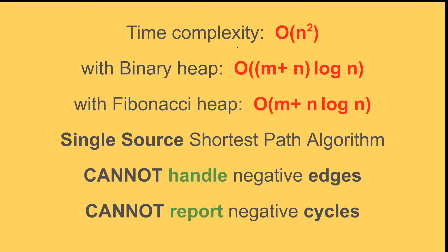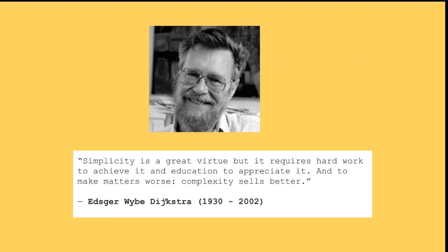As a summary, the time complexity of this algorithm, because it has two main loops, is order of n squared normally, n being the number of nodes in the graph. With a binary heap or a Fibonacci heap, you can improve this. It's an algorithm to find a single source to all other nodes in the graph. I didn't talk about negative edges or negative cycles, but it's important to know Dijkstra cannot handle negative edges. If you have negative edges in the graph, you cannot use Dijkstra. You should probably use Bellman-Ford or Floyd-Warshall or other algorithms. Also, naturally it cannot report negative cycles.